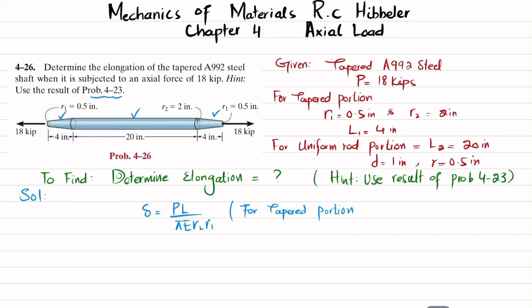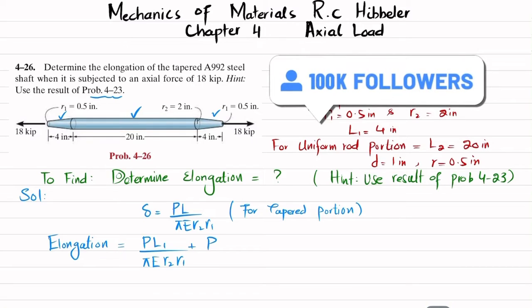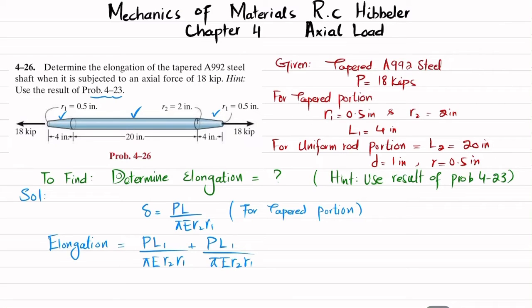Since we have two tapered portions and one uniform diameter, total elongation in this rod will be equal to elongation in this portion plus elongation in this portion plus elongation in this portion. For tapered portion it will be P times L1 divided by pi times E times R2 times R1, plus elongation in the uniform rod which is given by formula P times L2 divided by A times E.